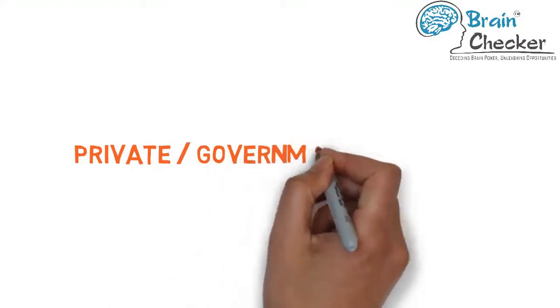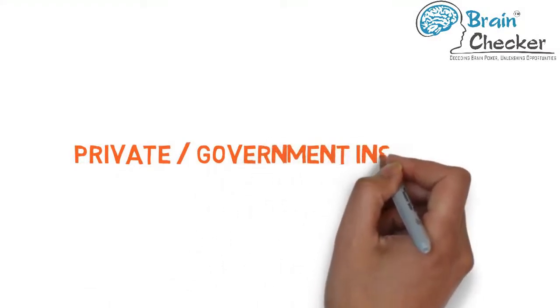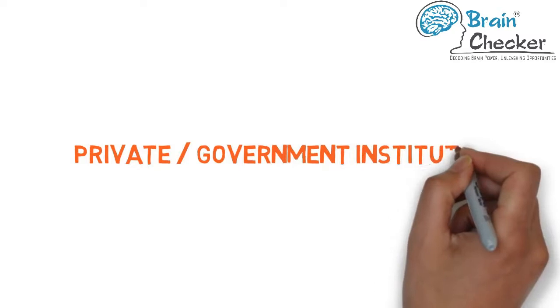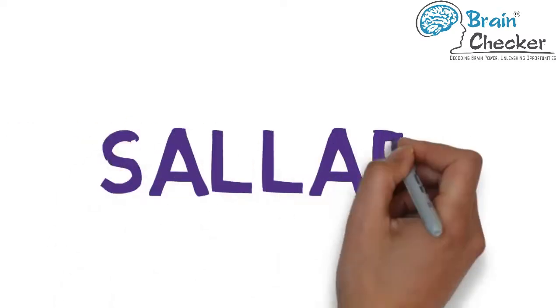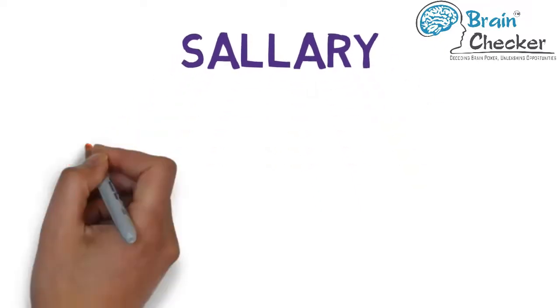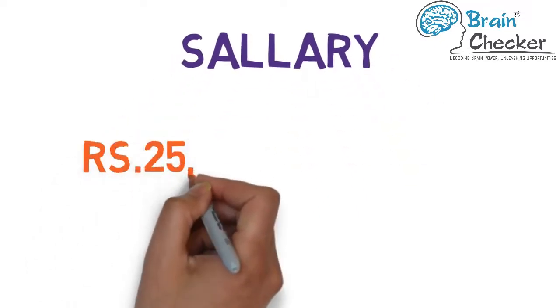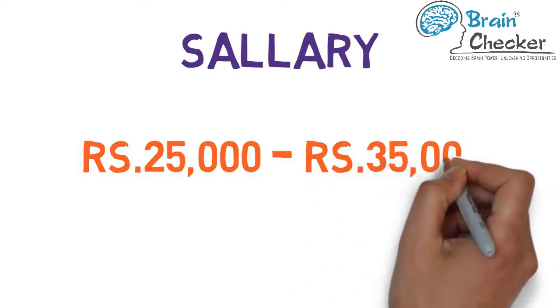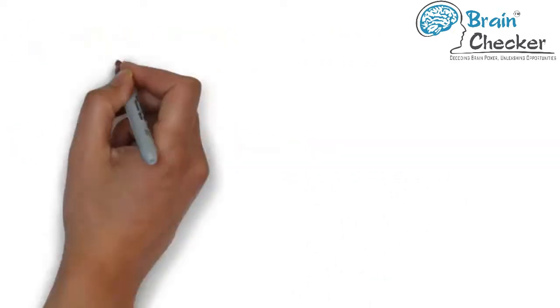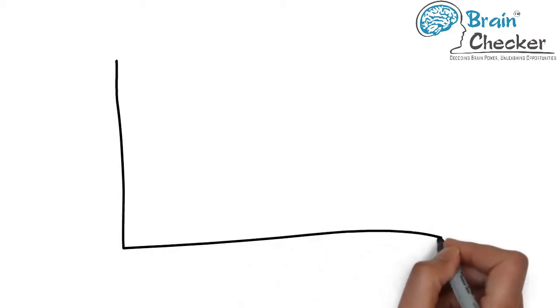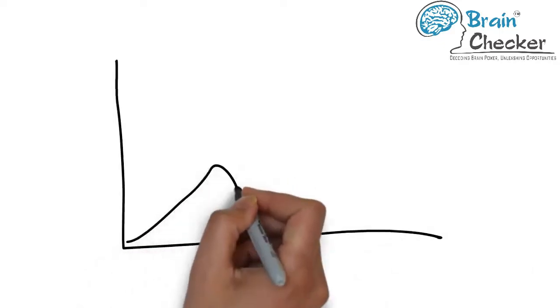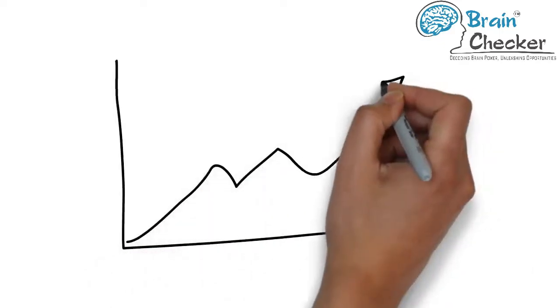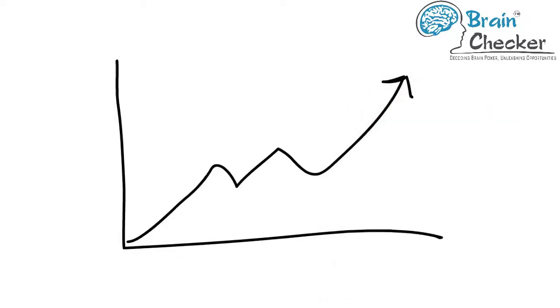Those who are employed in government or private organizations get lucrative remuneration along with perks and other benefits which are revised from time to time. In India, the professionals who are working in pharmacy or biotech labs can get starting salary somewhere between 25,000 rupees to 35,000 rupees per month. With experience, the salary will grow multiple times. The starting salary will also increase or decrease depending on the college where the student pursues his higher qualifications.